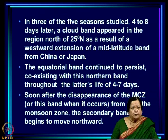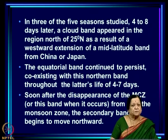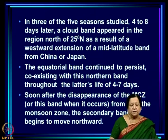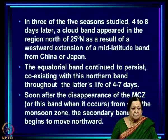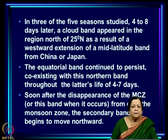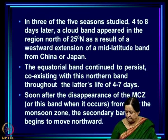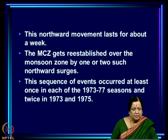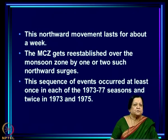The equatorial band continues to persist, coexisting with this northern band throughout its life of 4 to 7 days. Once the MCZ and the mid-latitude band disappear, the secondary band begins to move northward — the oceanic TTCZ. This northward movement lasts about a week, and the MCZ gets re-established over the monsoon zone by one or two such northward surges.